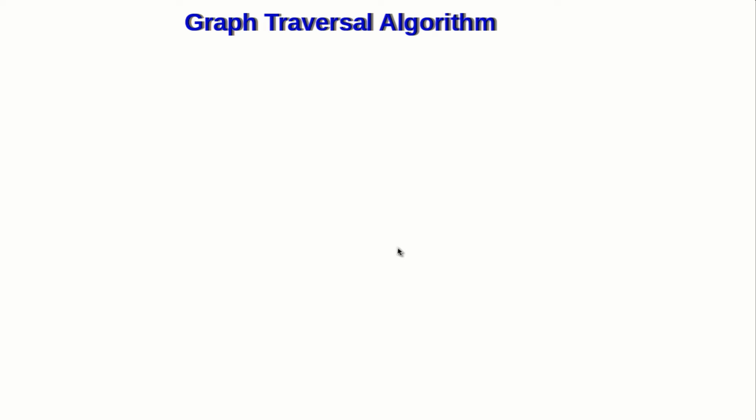Let's talk about graph traversal algorithms. Traversal means visiting each and every node or vertex of a graph exactly once. But why do we need graph traversal algorithms? Why can we not simply loop through each of the vertices of the graph and print that?